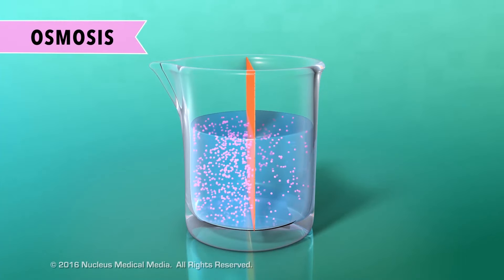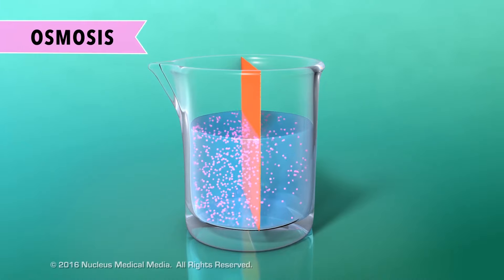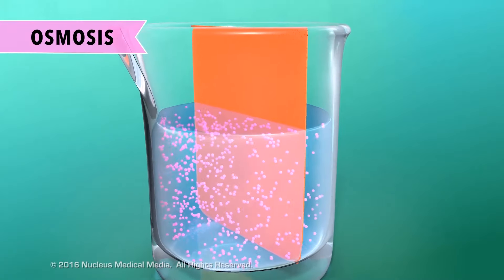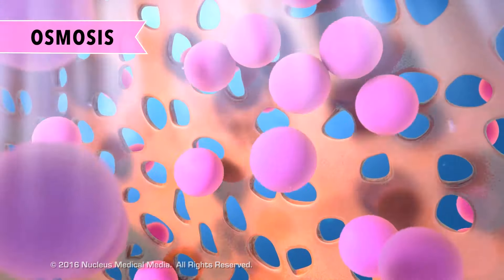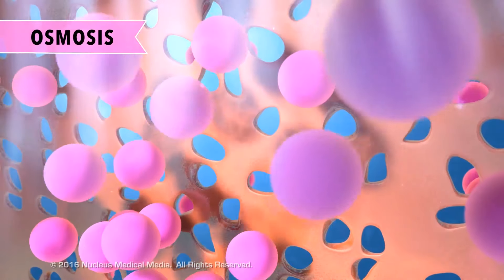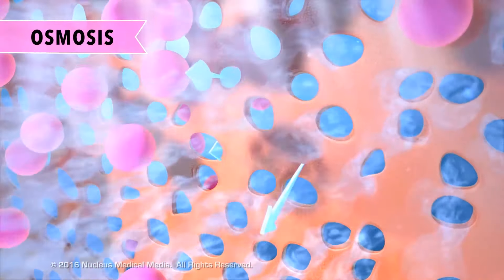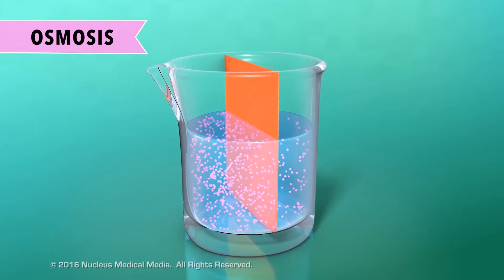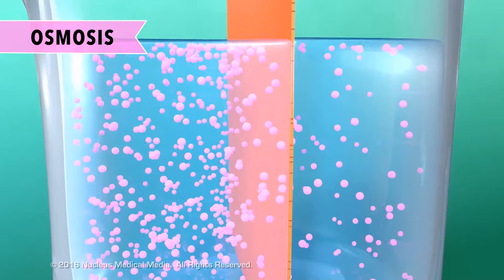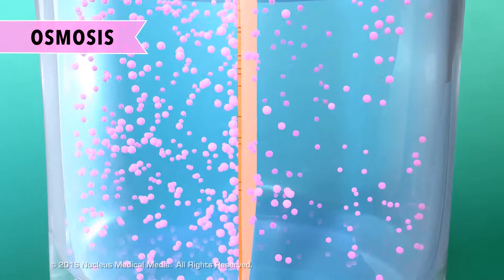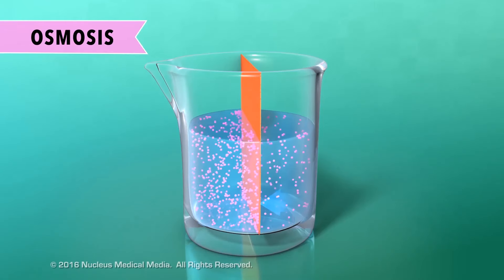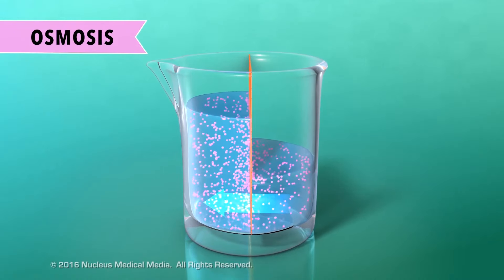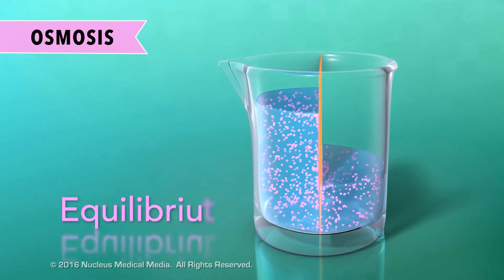Osmosis is diffusion that happens with water molecules. Let's look at another container, in which the solvent is water, but the solute particles are larger. The membrane in this container has openings that are too small for the solute to move through, but water can pass through the membrane freely. This time, we'll focus on the concentration gradient of the water rather than the solute particles. Although the large solute particles can't pass through the membrane, the water molecules are small enough to pass through.